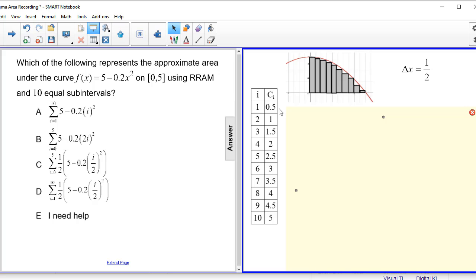And the values of c_i would be: the first right hand interval is at 0.5, the second right hand interval is at 1, the third right hand interval is at 1.5, and so on until we get to the 10th right hand interval located at x = 5.